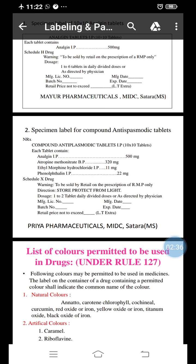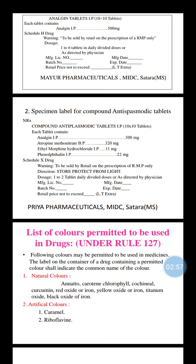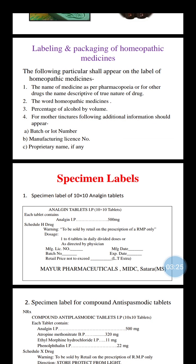Each tablet of the compound anti-spasmodic tablet contains: Analgin IP 500 mg, Atropine Methyl Nitrate BP 320 mg, Ethylmorphine Hydrochloride IP 11 mg, Phenolphthalein IP 22 mg. Schedule H drug warning: 'to be sold by retail only on prescription by RMP only.' Direction: store protected from light. Dose is 1 to 2 tablets daily in divided doses or as per direction by physician. Also includes manufacturing license number, manufacturing date, batch number, expiry date, and retail price.